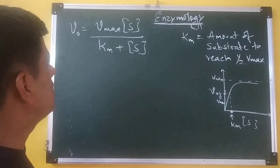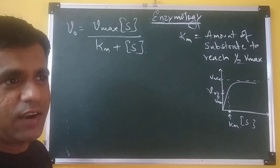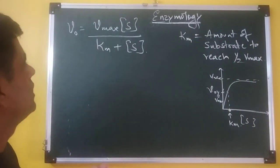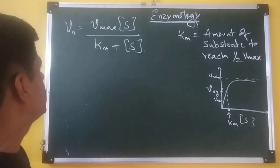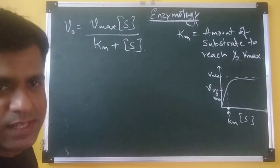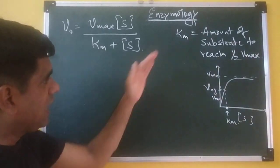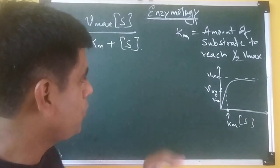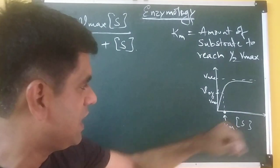Now, this is the MM equation, which has been derived after the steady state approach for a single step, single substrate enzyme catalyzed reaction: V0 equals Vmax times S upon Km plus S. In this, we define Km as the amount of substrate required to reach half of the Vmax. So, if you plot the graph of V0 versus S,